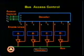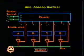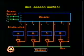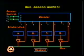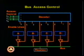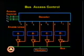Bus contention is not at all desirable. To prevent bus contention, some mechanism of access control is used so that only one source can put data on the bus at any point of time. A simple access control may be mechanized using tri-state gates and a decoder. Depending on the selection input, only one source is allowed to put data on the bus; the other sources remain insulated from the bus due to their high impedance states.